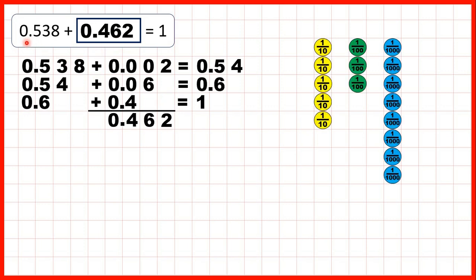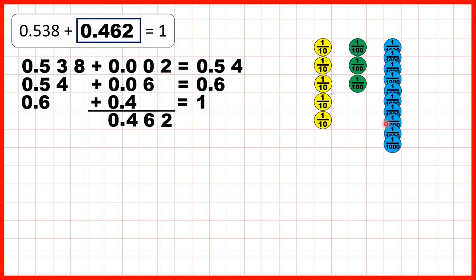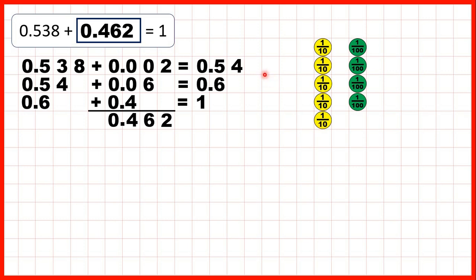Then we started with 0.538 — so that's five tenths, three hundredths, and eight thousandths. First we added two thousandths. When we do that, we get ten thousandths, which is the same as one hundredth, so that leaves us with four hundredths, and with the five tenths gives us 0.54.